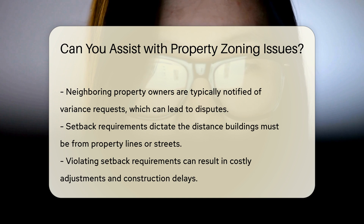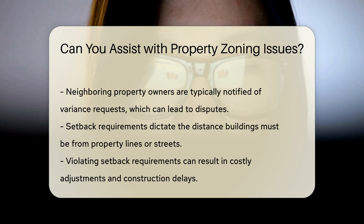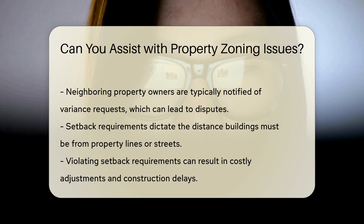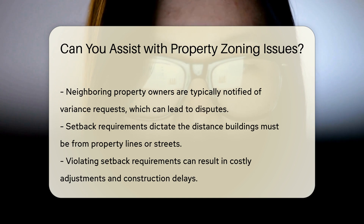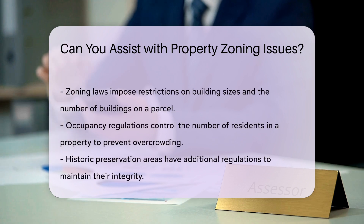Building restrictions. Zoning laws limit the size of buildings and how many buildings can be on a parcel. This prevents overdevelopment and ensures community harmony. Occupancy violations. Zoning laws control how many people can occupy a residence, helping maintain residential areas and prevent overcrowding.